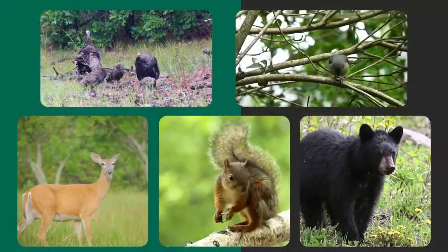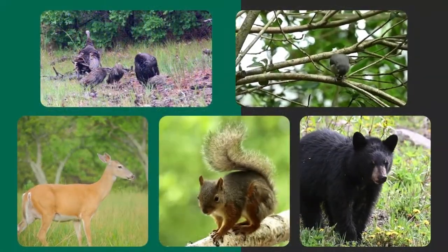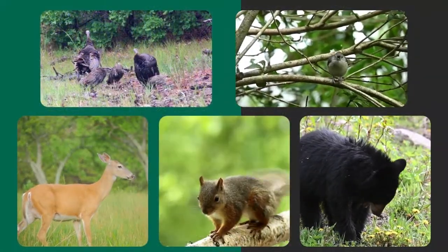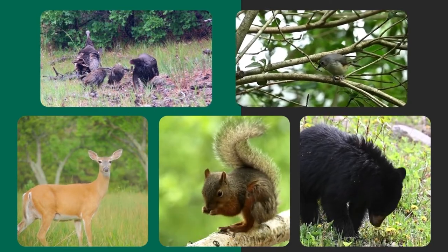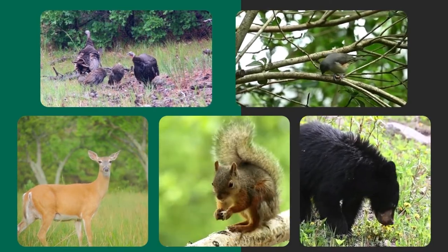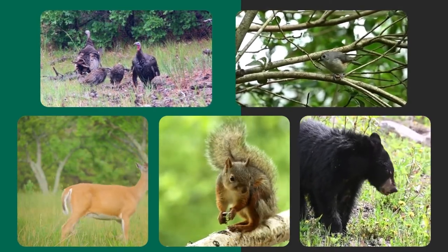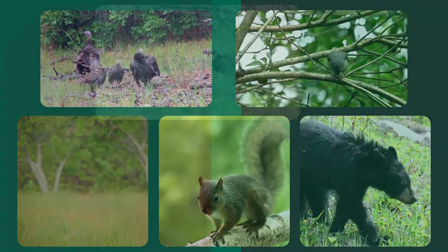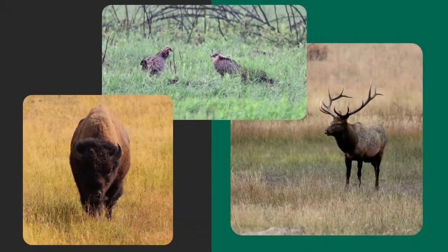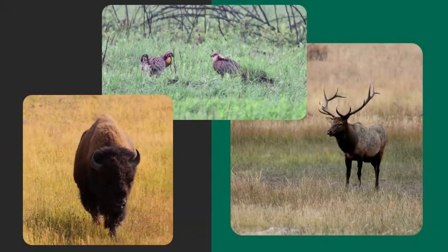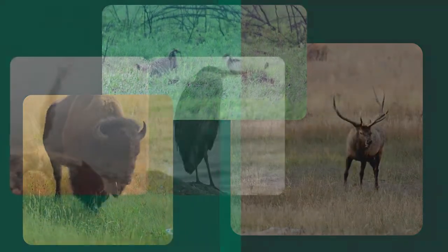The woodlands supported a diverse range of wildlife, like white-tailed deer, raccoons, squirrels, wolves, wildcats, black bears, coyote, turkey, grouse, and a variety of other birds. Bison, elk, and prairie chickens were present in the prairies and oak savannah.